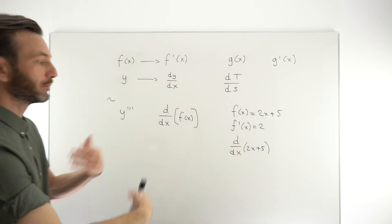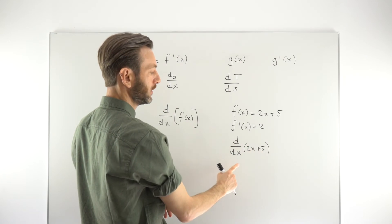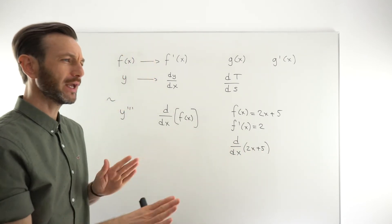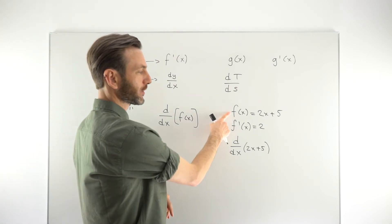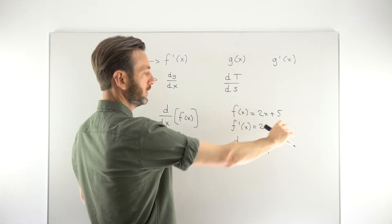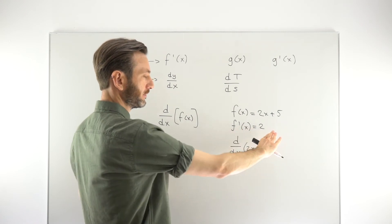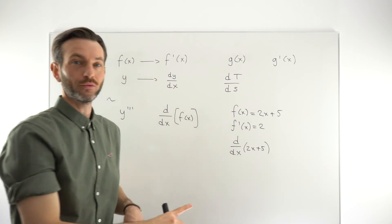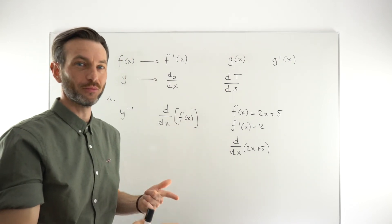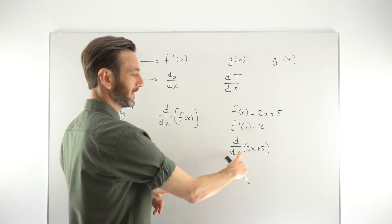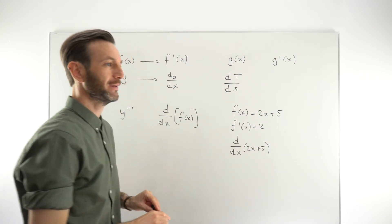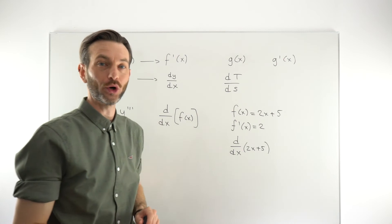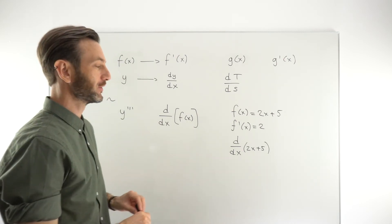So that kind of says, I'm going to take the derivative of this with respect to x, but I've not yet taken the derivative. It's quite a subtle difference, but this is just the function. This is just saying, hey, I'm this function. This is saying, I'm the derivative of this function. This is saying, I'm going to be the derivative. Once you actually take the derivative, but you've not taken the derivative yet. This is like the intention to take the derivative.